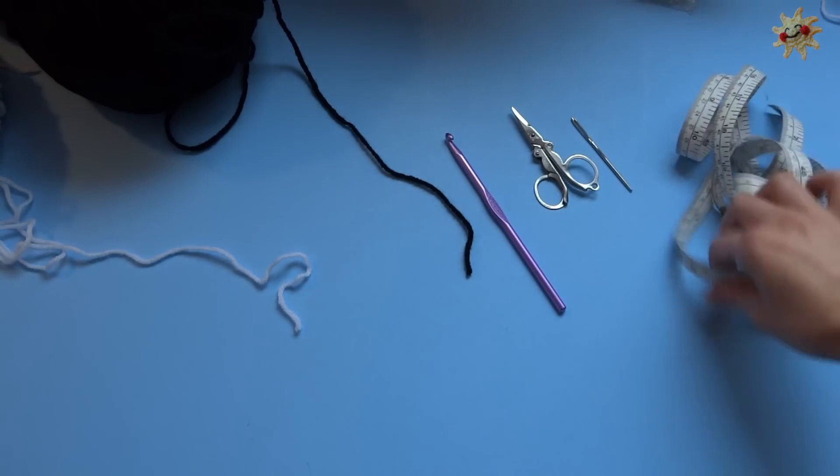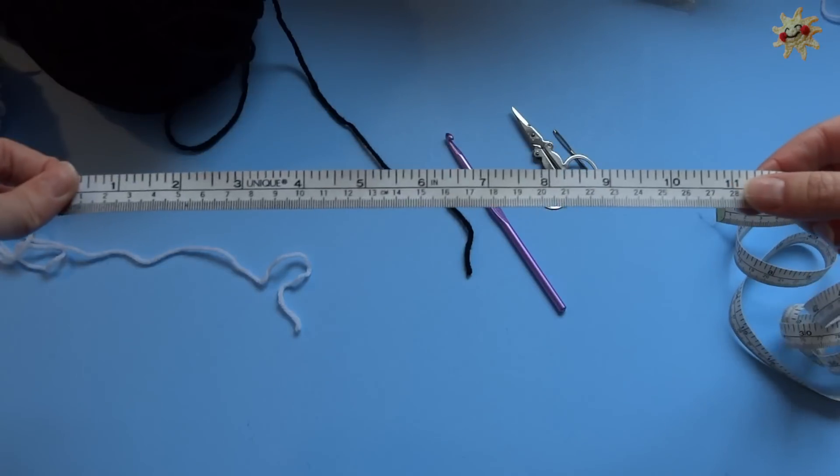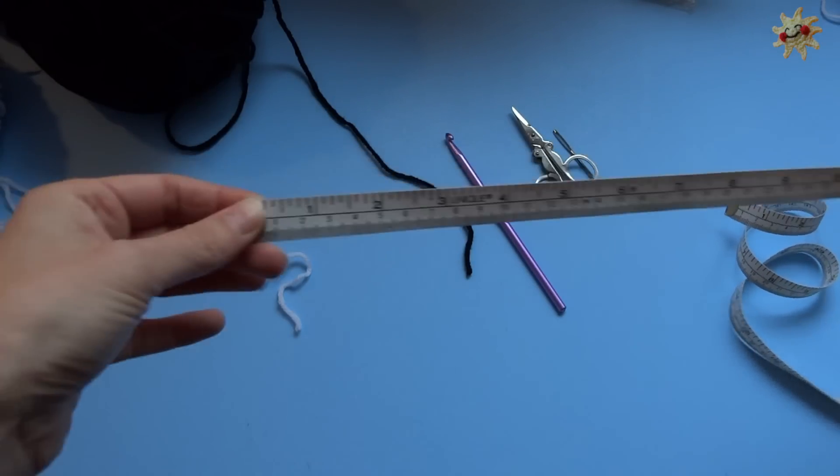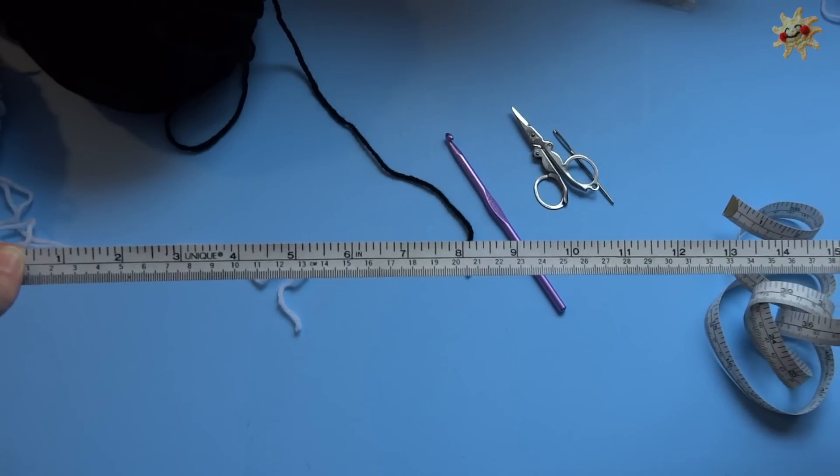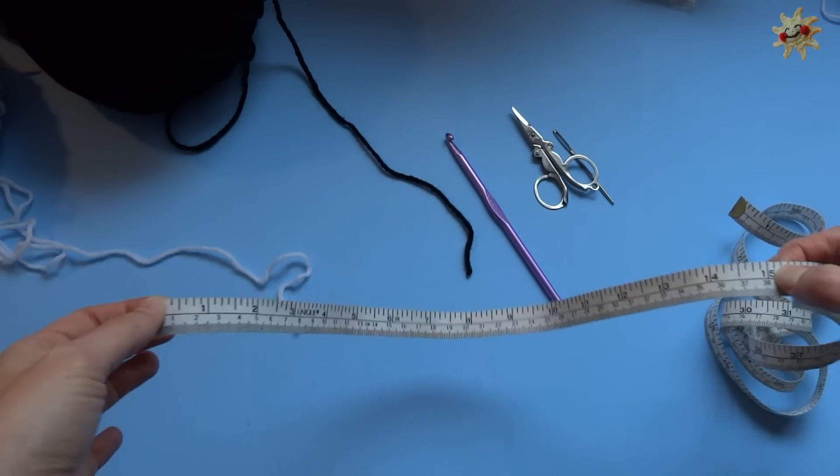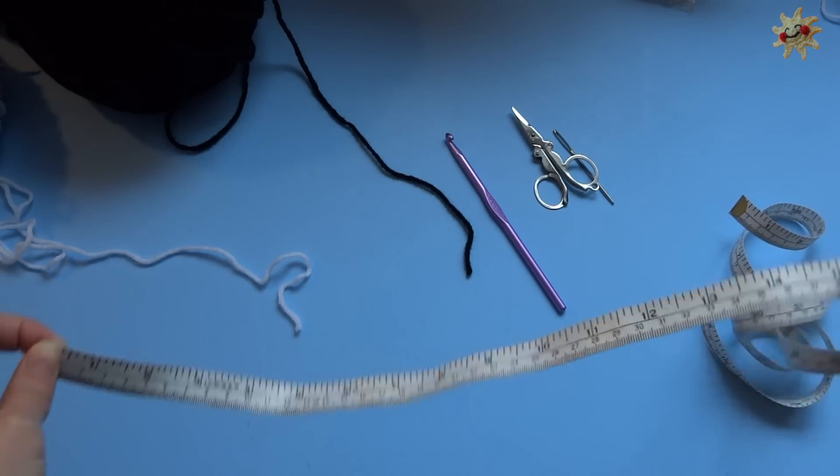So first thing I'm going to do is I've already gone ahead and I've measured from my knee to my ankle and that's 15 inches for me, and I'm going to make it actually 15 inches long because I don't typically wear my leg warmers all the way up to my knee, but I want them to scrunch a little bit because I like that sort of scrunchy look.